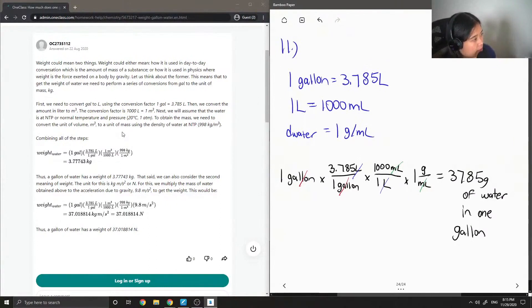First, we need to convert gallons to liters using the conversion factor, one gallon is equal to 3.785 liters. Then we convert the amount in liters to meter cubed. The conversion factor is 1,000 liters is equal to 1 meter cubed.